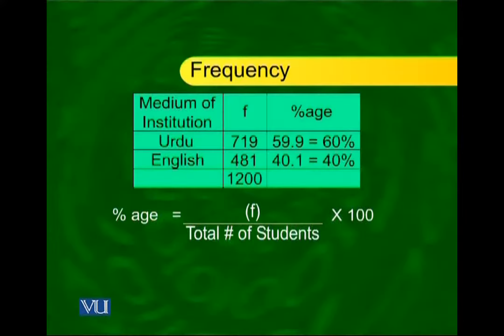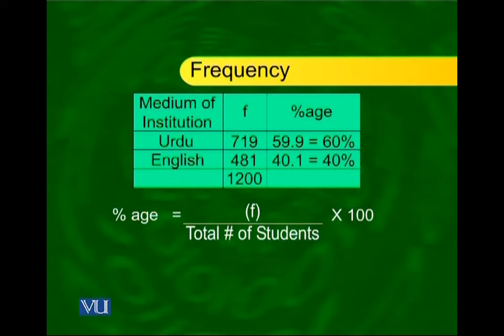I think you will agree that this frequency information is not as useful as if we were to convert these figures into percentages. So that is the next step. We simply divide the frequency of the first cell 719 by the total 1200 and multiply by 100 to get the percentage. As you can see, 60% of the students in the first year have come from Urdu medium schools and 40% have come from English medium schools. What we have just accomplished is an example of a univariate frequency table pertaining to qualitative data.